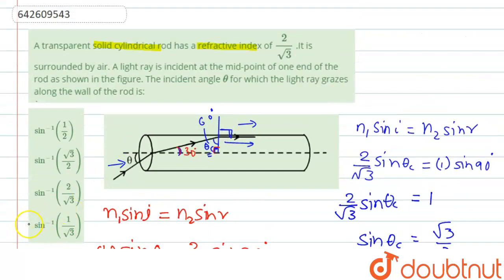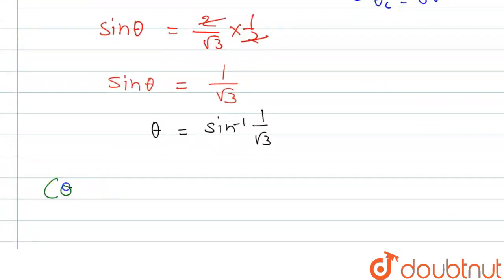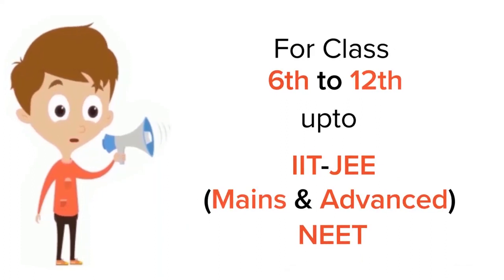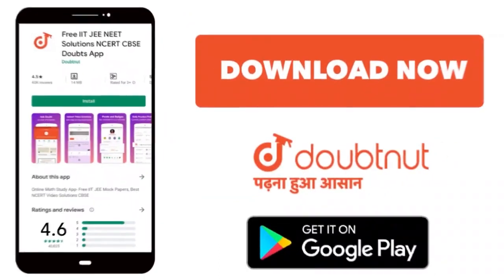So if we check the option, the correct option is sin inverse 1 by root 3. So we can write correct answer is sin inverse 1 by root 3. Thank you. For class 6 to 12, IIT and NEET level, trusted by more than 5 crore students, download Doubtnet app today.